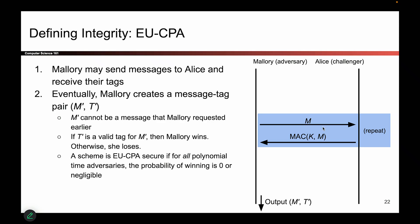This is where Mallory gets to exercise her powers from the threat model. She gets to repeat this a polynomial number of times — she can't do this forever, but she can repeat it as many times as she feels like. What she'll do is tell Alice: here's a message, can you generate a MAC for me? And Alice will faithfully take the key and the message that Mallory provided, generate the MAC and send it back to Mallory. In other words, Mallory gets to see MACs for messages that she chooses.